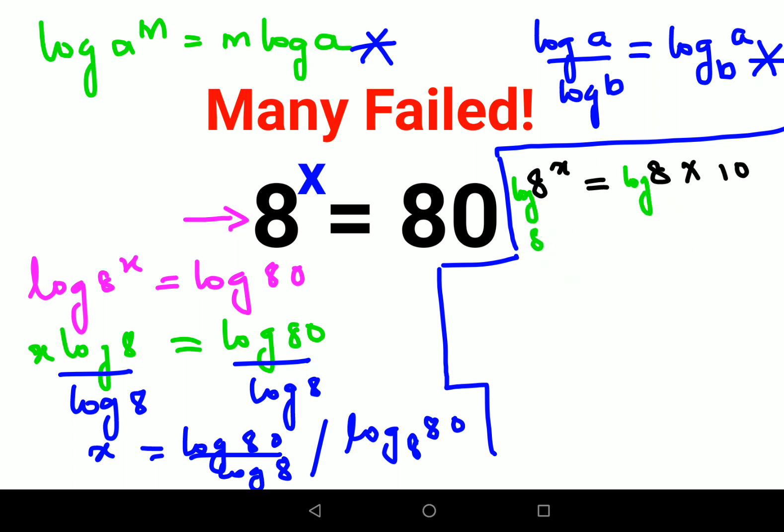So this becomes X log 8 and this becomes log of a product AB. This can be written as log of A plus log of B. So this will be written as log 8 plus log 10.